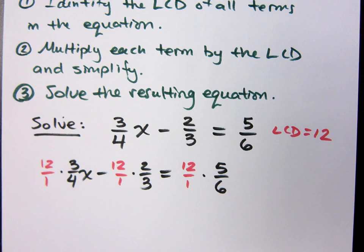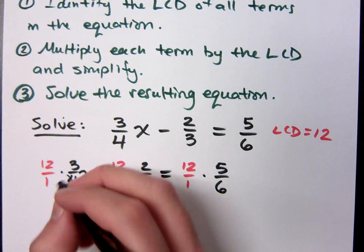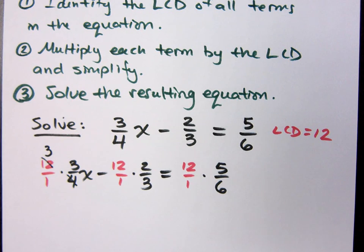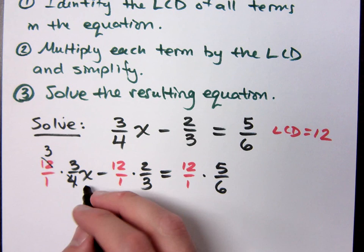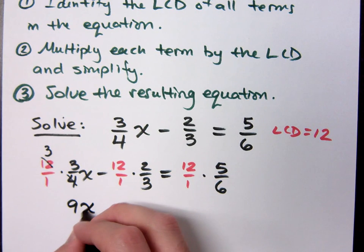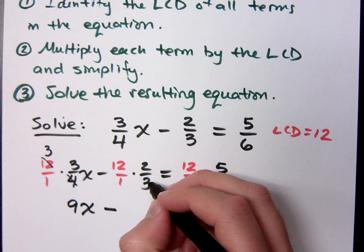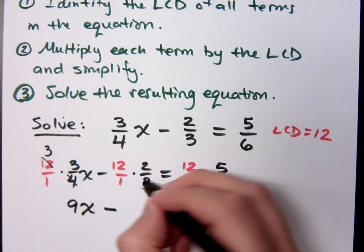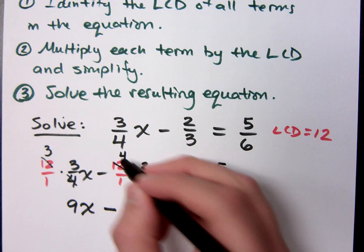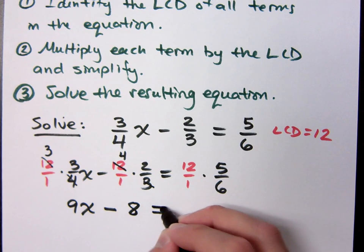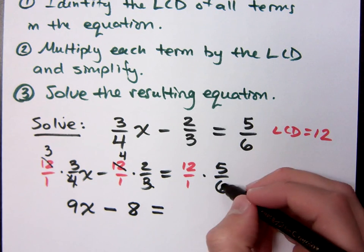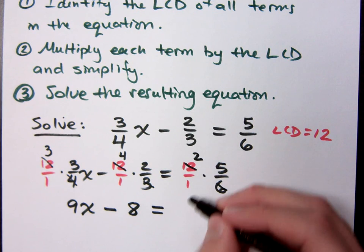The other way of doing this is to get everybody to have that same denominator. Once everybody has the same denominator, you just focus on the equation that's formed from the numerators. It's going to be the same thing as this. So here, 4 reduces into the 12 three times. So now I don't have a denominator here. I just have 3 times 3x, which is 9x minus what? 3 goes into 12 four times, so we get minus 8 equals what? It equals 10, because 6 goes into 12 twice. 2 times 5 is 10.